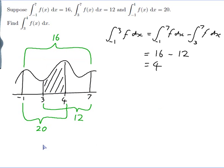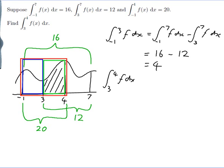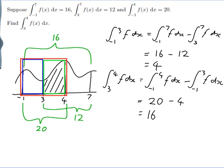Now the same kind of argument should get me the integral from 3 to 4, because we have the integral from minus 1 to 4 and we have the integral from minus 1 to 3. So if we do from minus 1 to 4 minus from minus 1 to 3, that leaves us with from 3 to 4, which is the bit we want. The integral from minus 1 to 4 is 20, and from minus 1 to 3 it was 4, so that is 16. And that's the end of the problem.